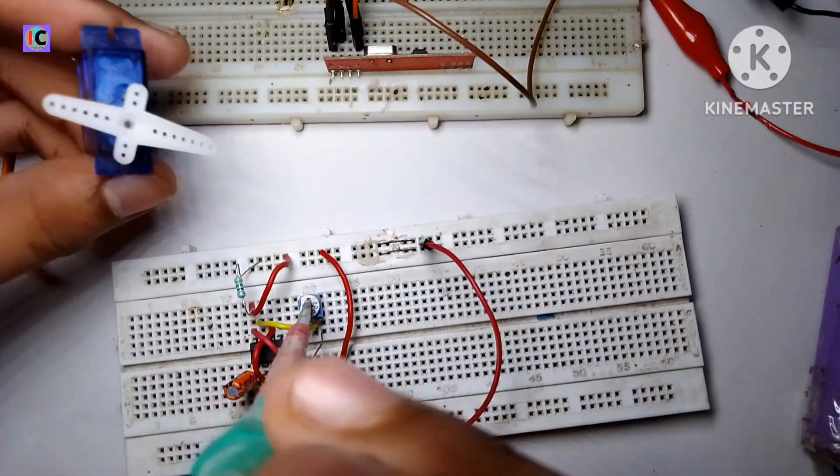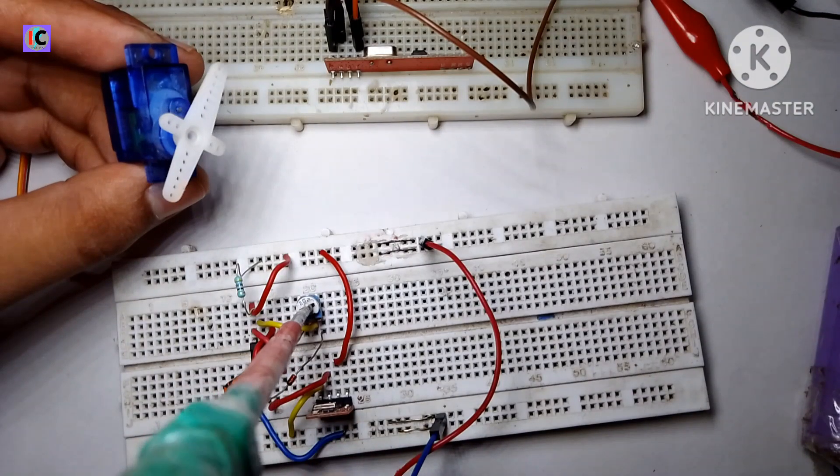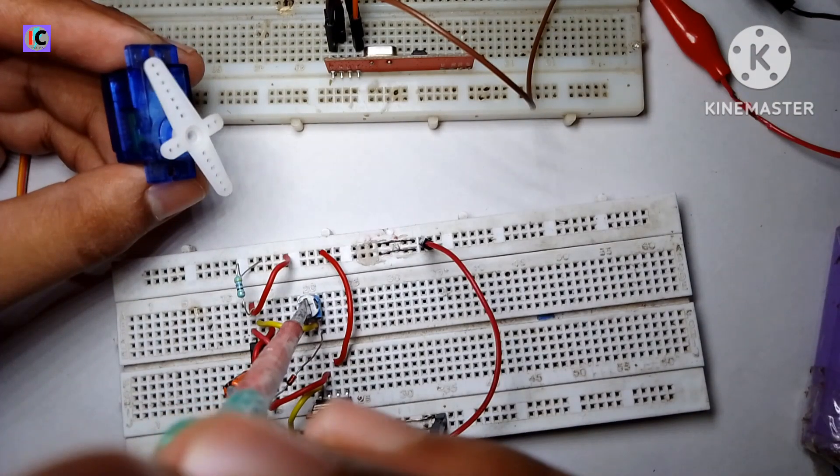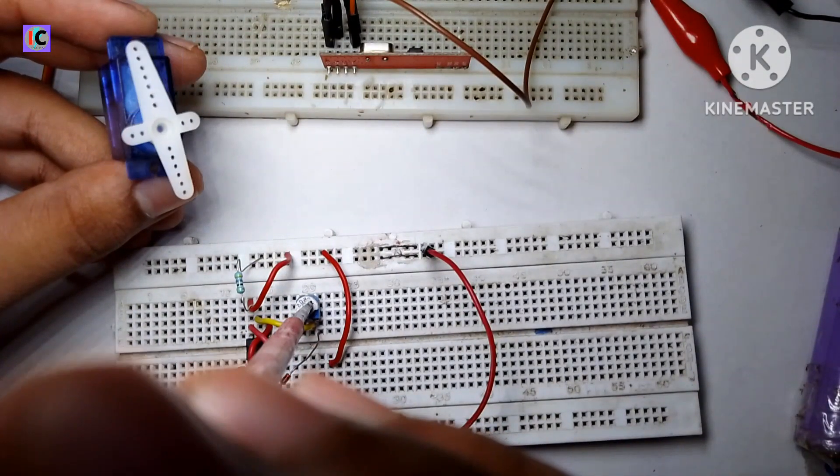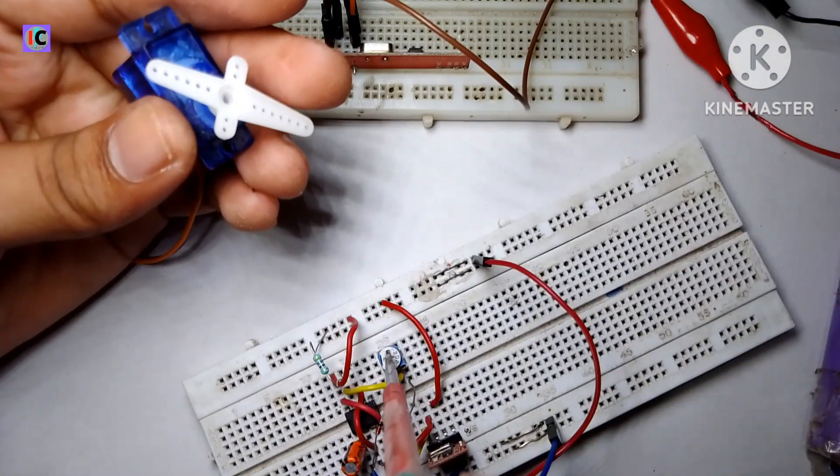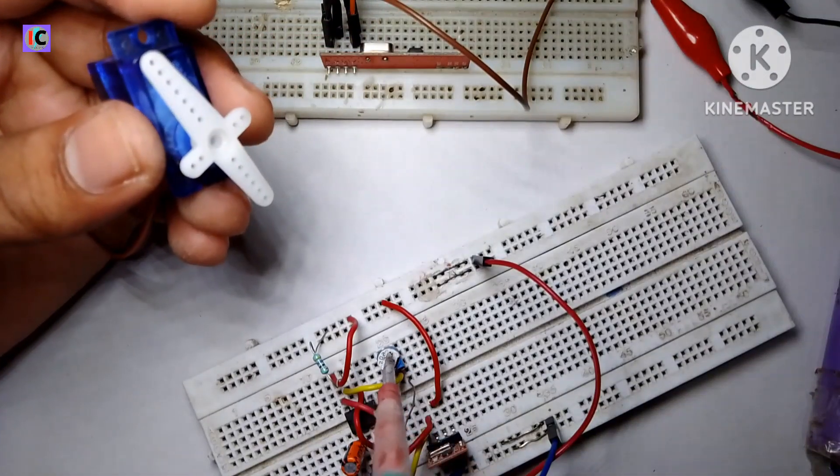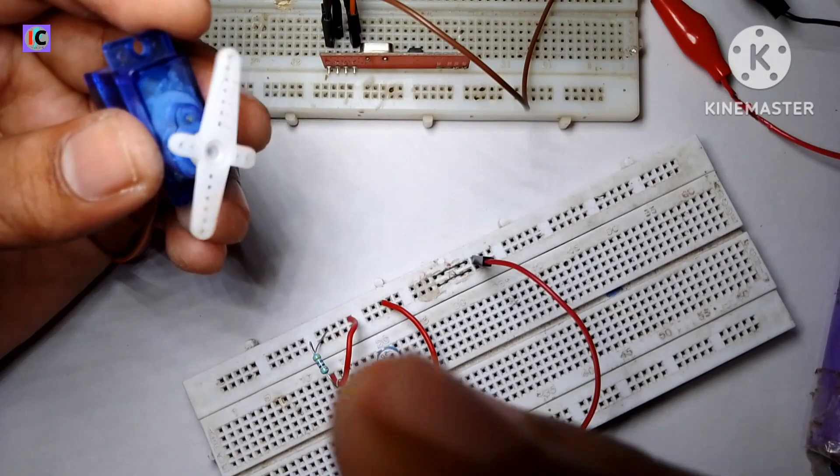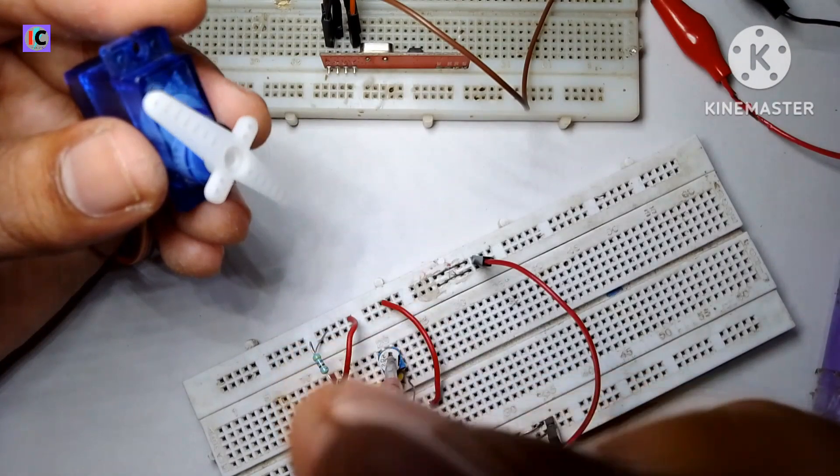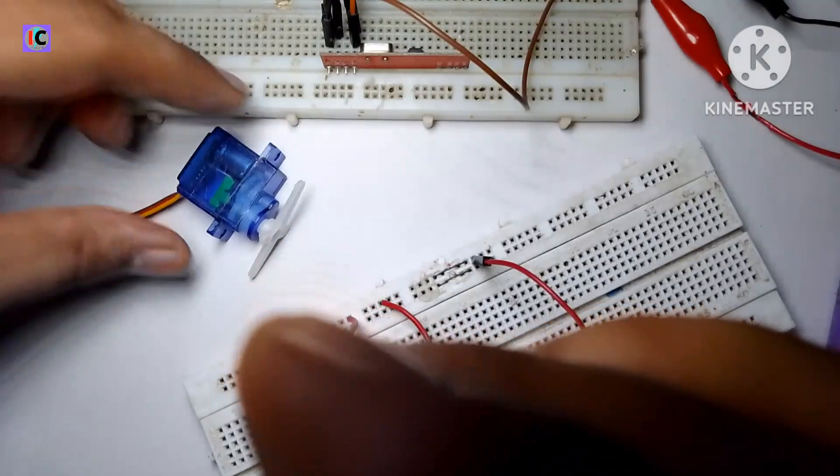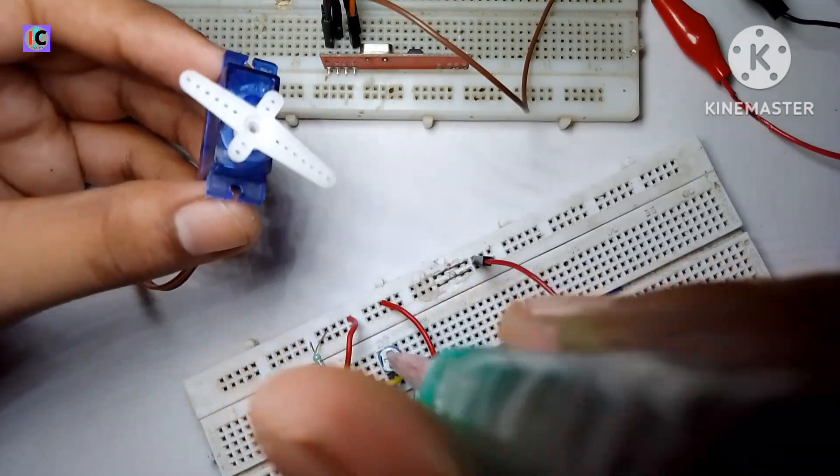You can see on the screen, when I rotate the potentiometer it rotates accordingly and it's very accurate. This servo has 180 degree rotation capability. If you can see, if I stop the poles of the servo and release them, it goes back according to the transmitted data. This is it for today's video.